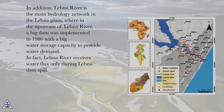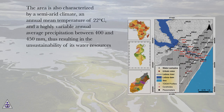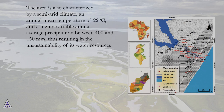a large dam was implemented in 1986 with significant water storage capacity to meet water demand. Lebna River receives water flux only during Lebna Dam spill. The area is also characterized by a semi-arid climate, an annual mean temperature of 22 degrees Celsius, and a highly variable annual average precipitation between 400 and 450 millimeters, resulting in the unsustainability of its water resources.